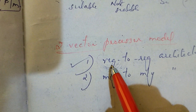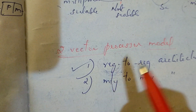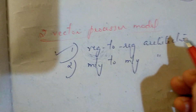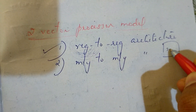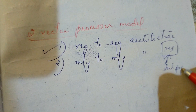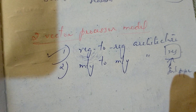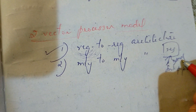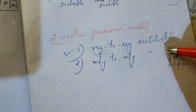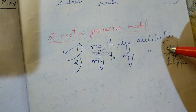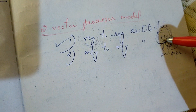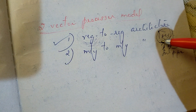Here we have vector functional pipelines. We will retrieve the operands from the registers — register to register. All vector registers are programmable, and the length of each vector register is fixed.